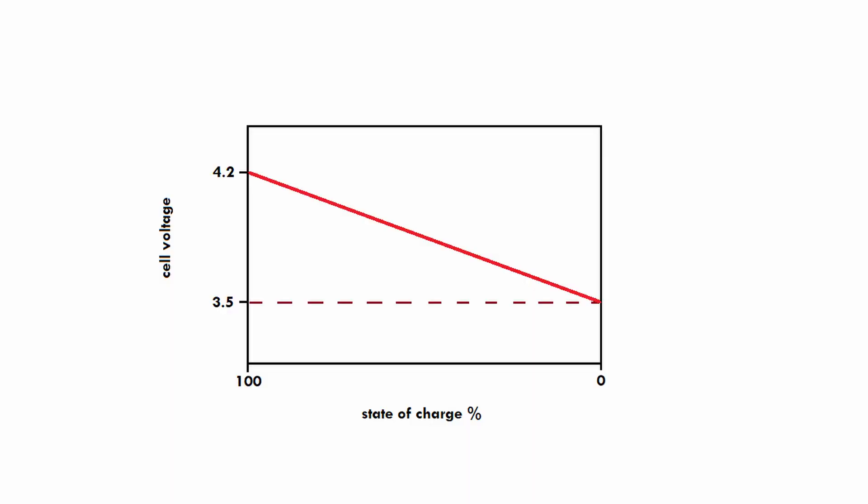Batteries behave similarly. If you look at a graph of actual state of charge versus voltage, you'll find it's not a straight line but more of a curve. So if you're going to use voltage to determine state of charge, you have to take that into account and approximate that curve, which can be quite difficult because the curve might also change a bit as the battery ages.